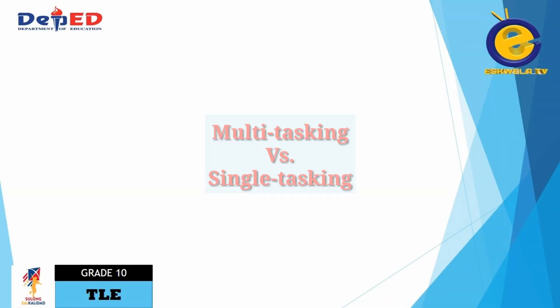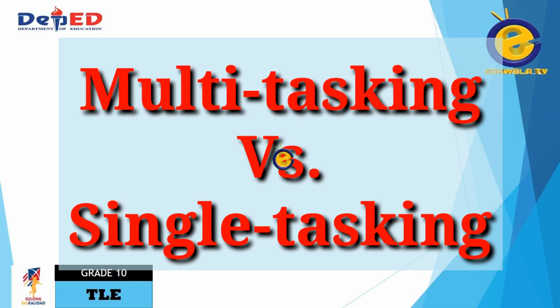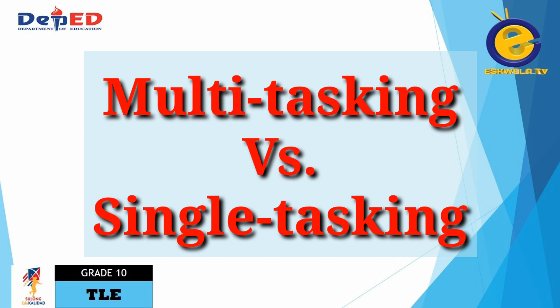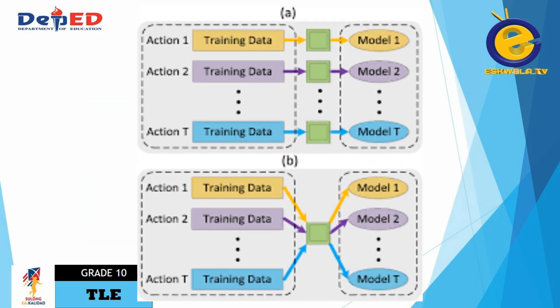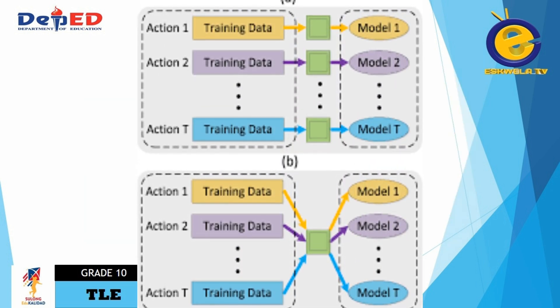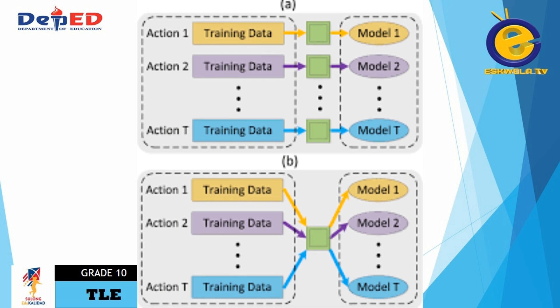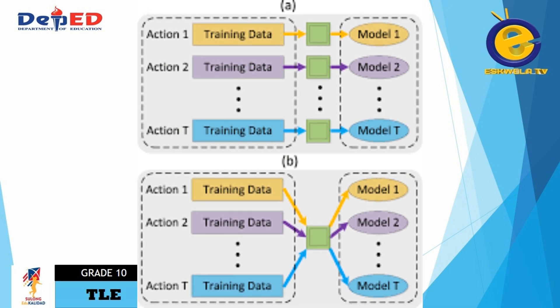The third type of operating system is multi-tasking versus single-tasking. When only a single program is allowed to run at a time, the system is grouped under a single-tasking system. However, when the operating system allows the execution of multiple tasks at one time, it is classified as a multi-tasking operating system.